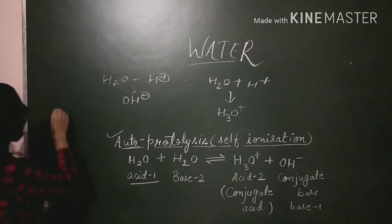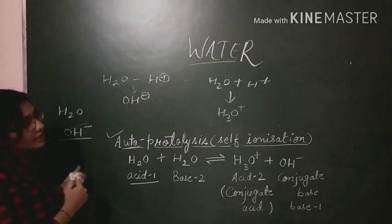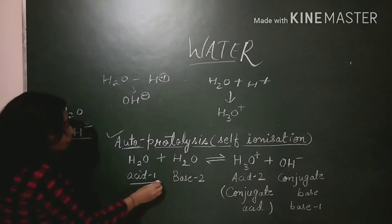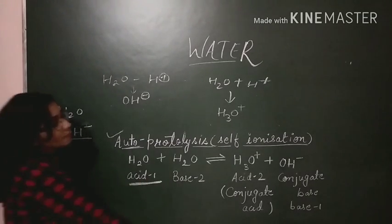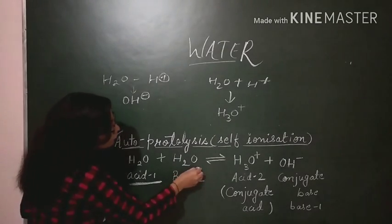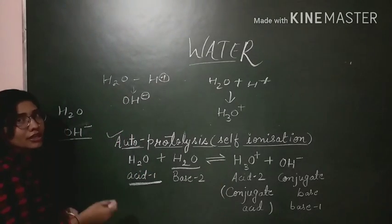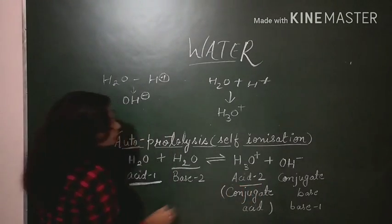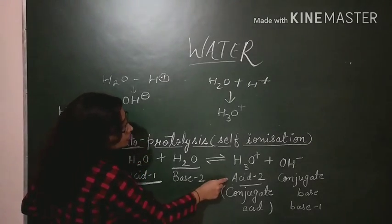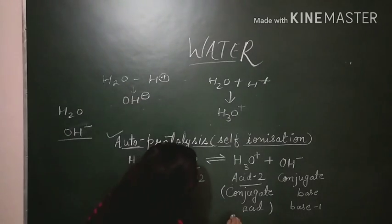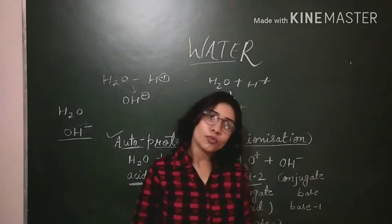In autoprotolysis, one molecule of H2O behaves like an acid and the other behaves like a base, giving the respective conjugate acids and bases. The species formed after Acid 1 loses a proton is called the conjugate base of Acid 1. Similarly, if the second water molecule reacts like a base, after accepting the proton it will behave like an acid — that conjugate acid is called Acid 2, which is the conjugate acid of Base 2.